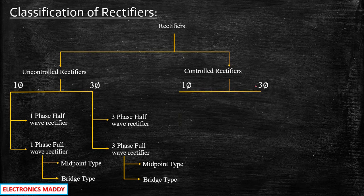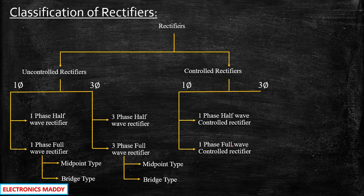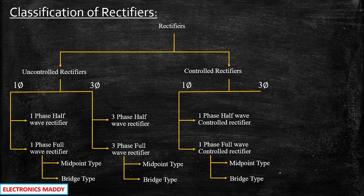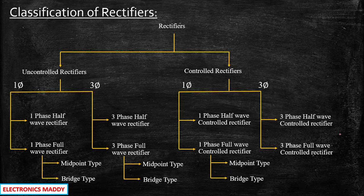In controlled rectifiers, again you have single-phase and three-phase classifications. In single-phase, the half wave controlled rectifier uses one SCR, and the full wave controlled rectifier has midpoint type and bridge type configurations. In three-phase, the half wave controlled rectifier uses three thyristors, and the full wave controlled rectifier uses six thyristors, also available in midpoint type and bridge type.